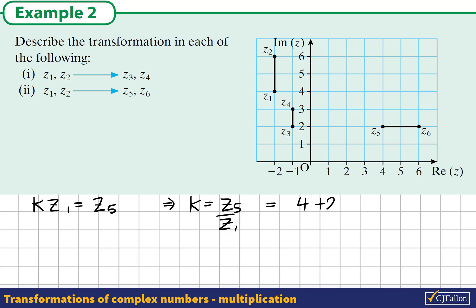Z5 in the Argand diagram is 4 + 2i. Z1 is -2 + 4i. To divide by a complex number, what we would do is multiply above and below by the conjugate of the denominator. The conjugate of -2 + 4i is -2 - 4i. So we'll multiply above and below by this.